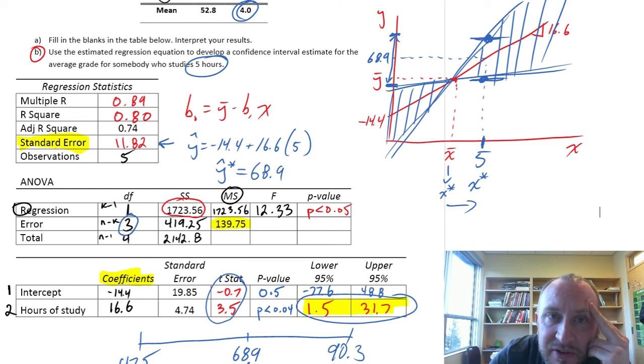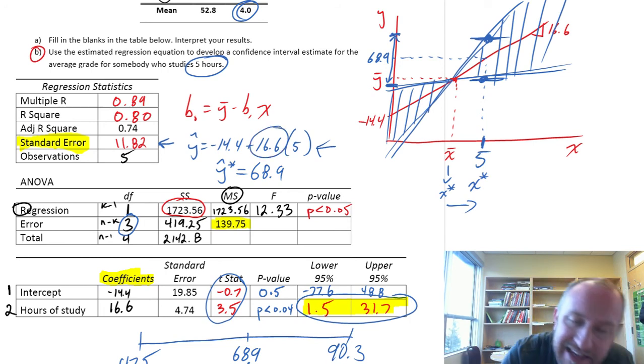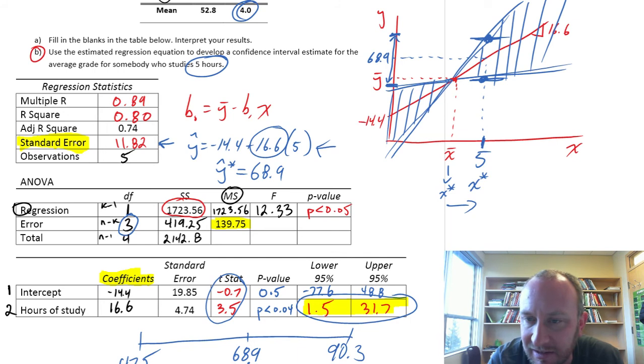Here we have our estimated regression equation, where we could look at this equation and say, okay, on average for every additional hour that somebody works, the average grade increases by 16.6 percentage points.